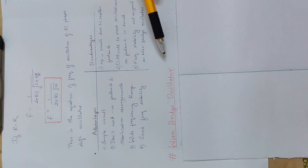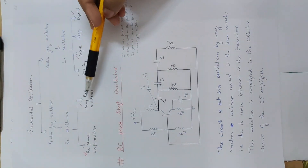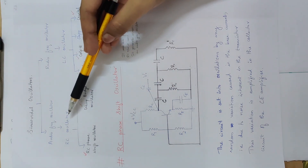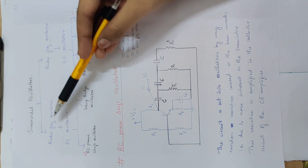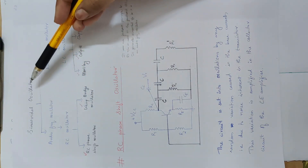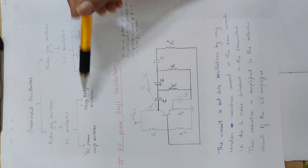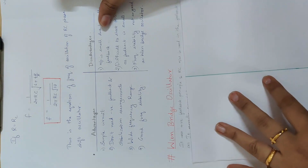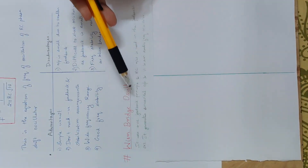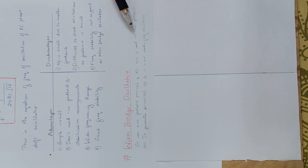Next is the Wien Bridge Oscillator. Our RC Phase Shift Oscillator is completed. The Wien Bridge Oscillator uses an RC feedback network and capacitors. It operates in the audio frequency range and generates a sinusoidal output waveform. It uses a positive feedback principle and an RC network in the feedback circuit.